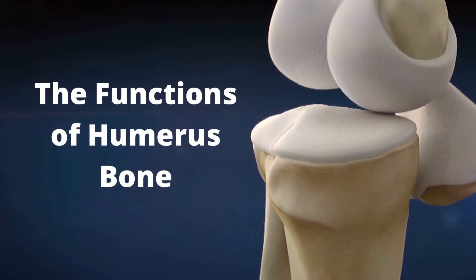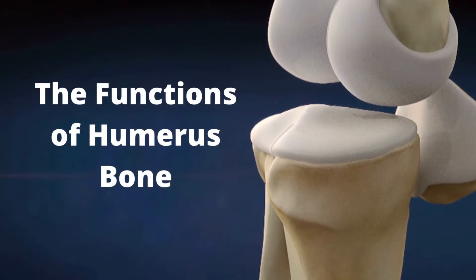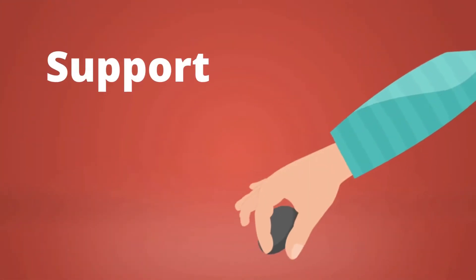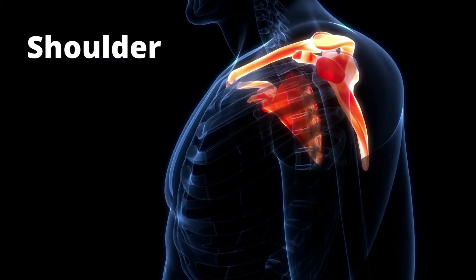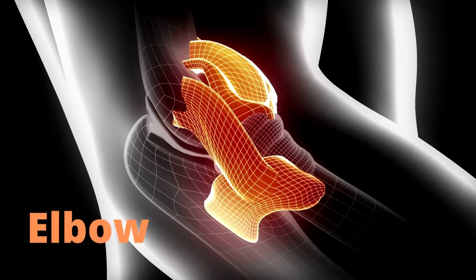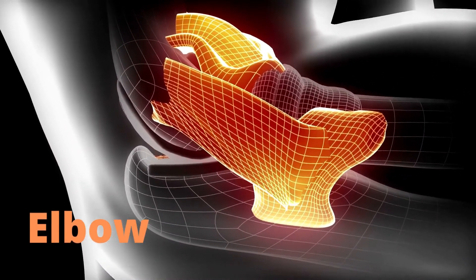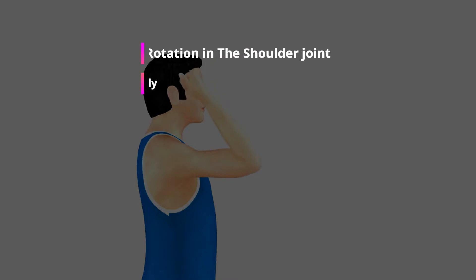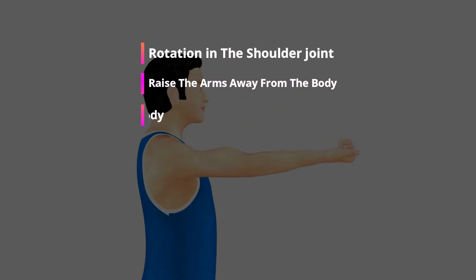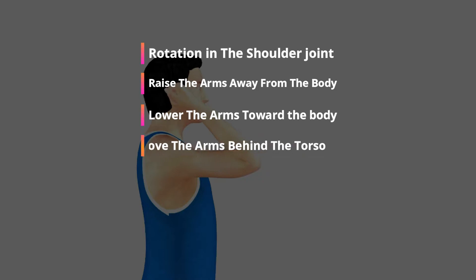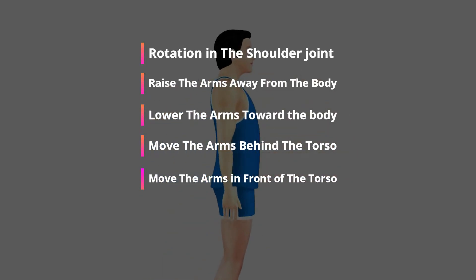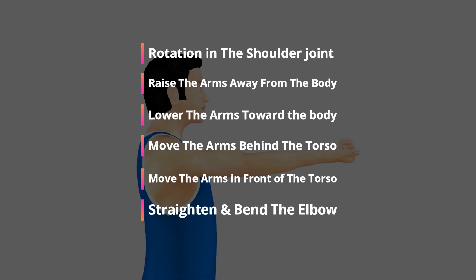The humerus has two critical functions: movement and support. The connections made by the bone at the shoulder and elbow allow a variety of arm movements, such as rotation in the shoulder joint, raising the arms away from the body, lowering the arms toward the body, moving the arms behind the torso, moving the arms in front of the torso, and straightening and bending the elbow.